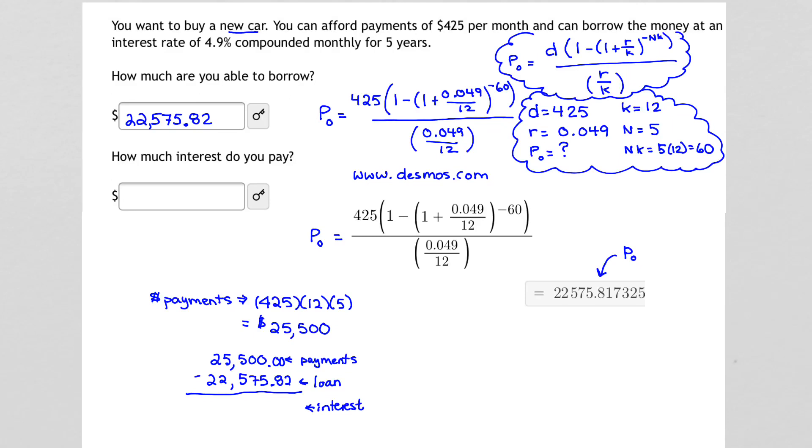That amount is $2,924.18. This is the amount of interest charged on this loan. And that goes in the second box, $2,924.18. And that completes our problem.